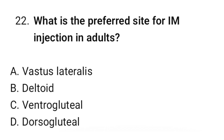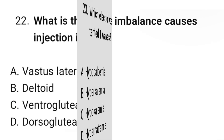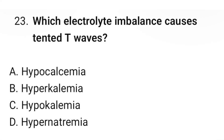Question number 22: What is the preferred site for IM injection in adults? The correct option is C: Ventrogluteal. Question number 23: Which electrolyte imbalance causes tented T waves? The correct option is B: Hyperkalemia.